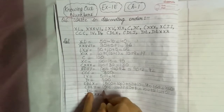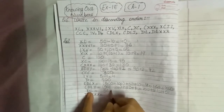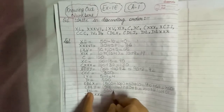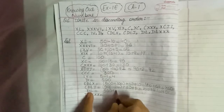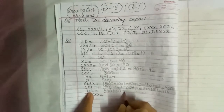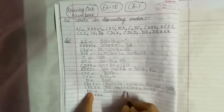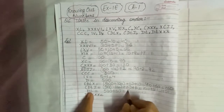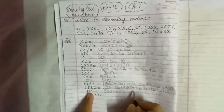Next is DL. D stands for 500 and L stands for 50. So 500 plus 50 equals 550.